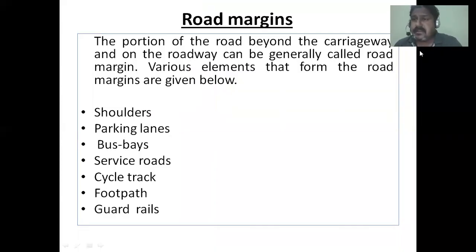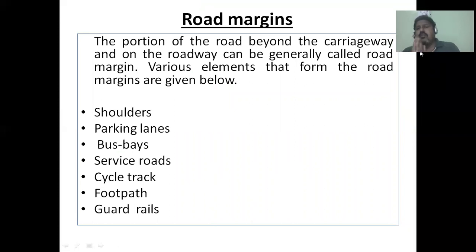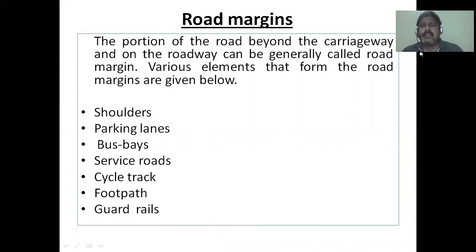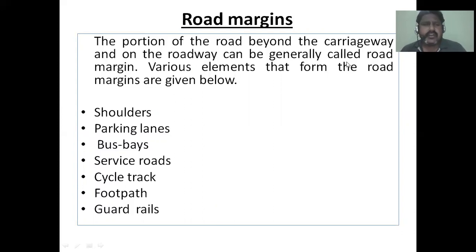Road margins: the part of the road beyond the carriageway can generally be called road margins. Various elements that form the road margins include: shoulders, parking lane, bus bay, service road, cycle track, footpath, and guardrails.